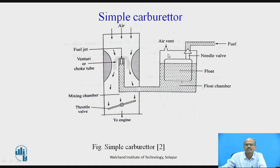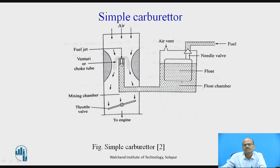This float chamber is communicating with the atmosphere through an air vent. The float chamber is connected to the venturi, and at the throat I am going to open the fuel jet. The petrol level in the float chamber is at a lower height than the mouth of the jet nozzle. The letter Z is used to describe the height difference between the nozzle tip and the petrol level in the float chamber, and it is always negative.